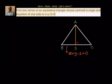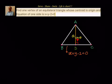Let's try to understand this problem. We have been given that the centroid of this equilateral triangle is (0,0). I'll write centroid as G, so G is (0,0). We know that the equation of BC is x plus y minus 2 equal to 0. We have to find out one vertex — either A, B, or C. We'll try to find vertex A.